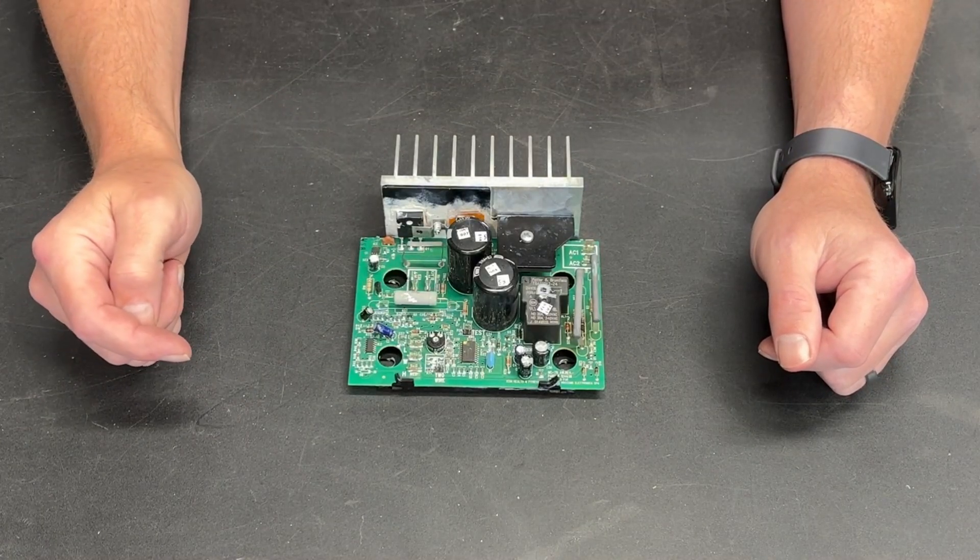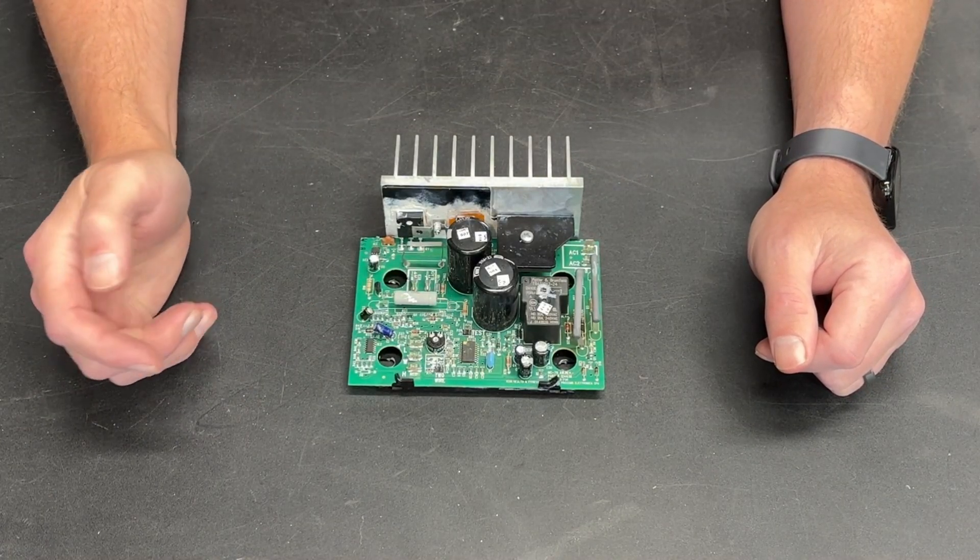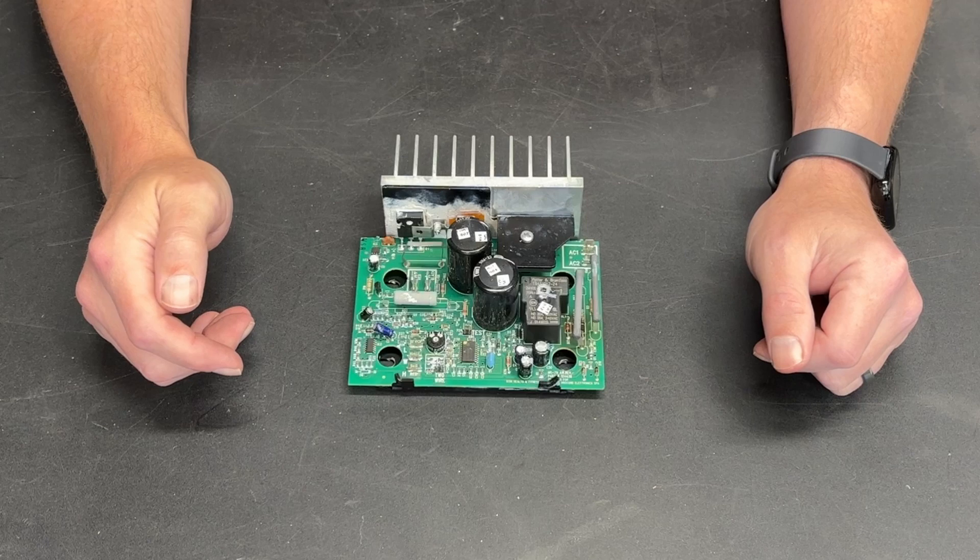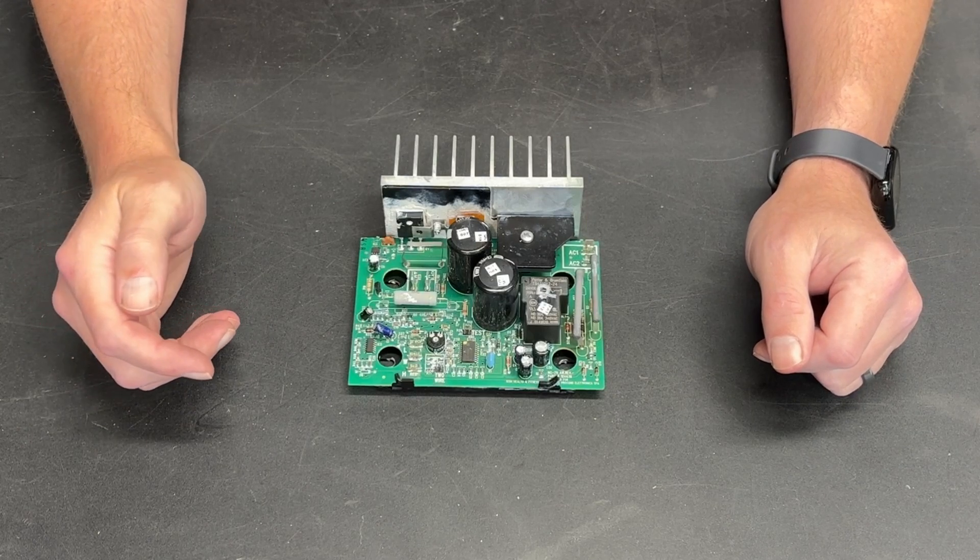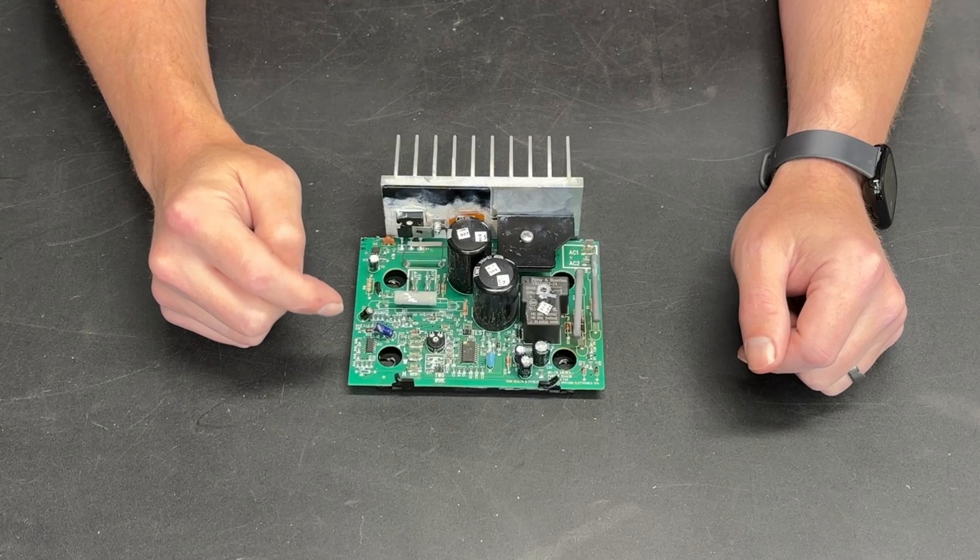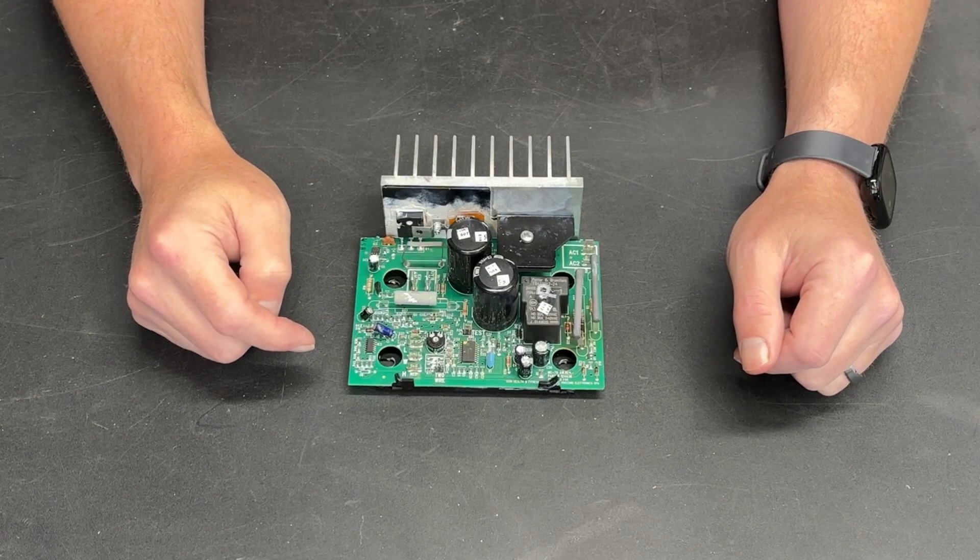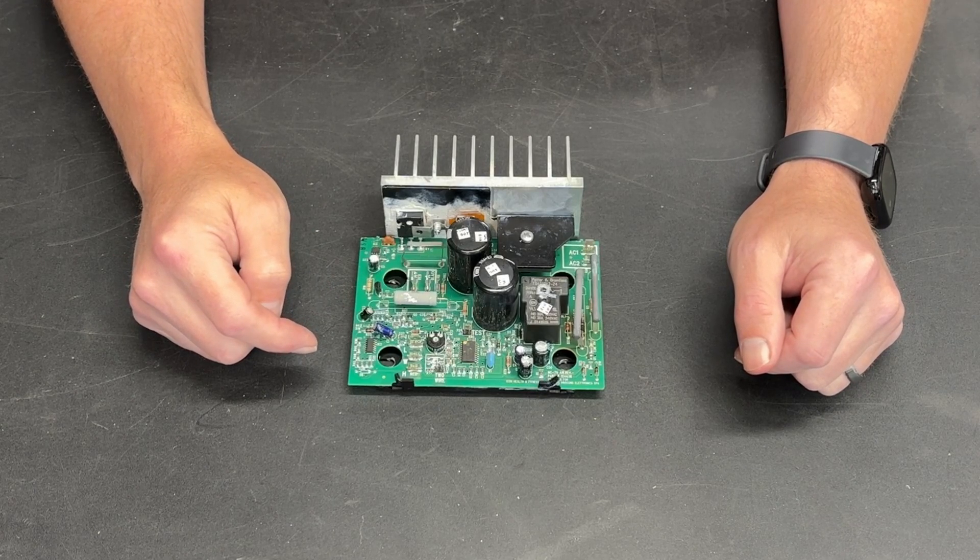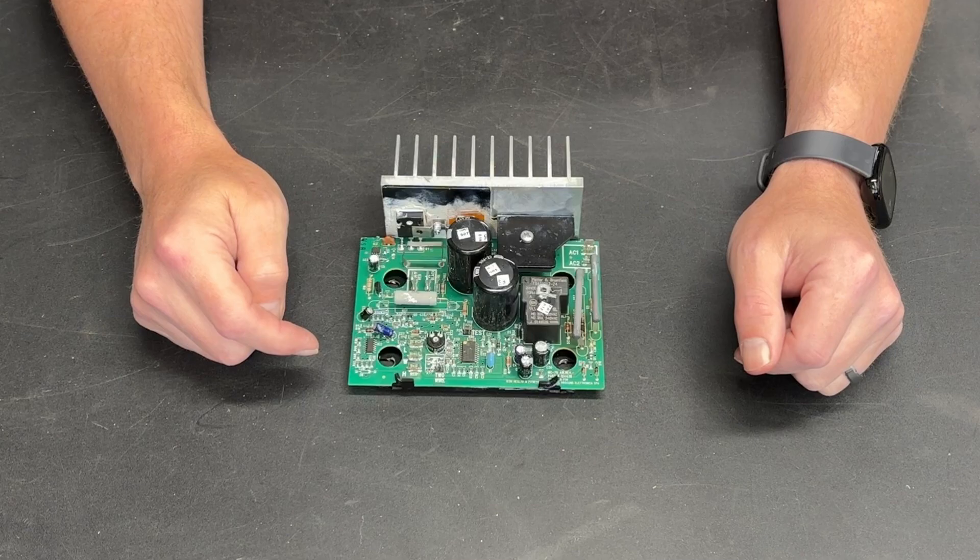So this is an MC-70, a less common motor control board that you may find when scrapping a treadmill. In this video, I'm going to show you how to hack it to work outside of the treadmill without having to use the cumbersome treadmill control panel.